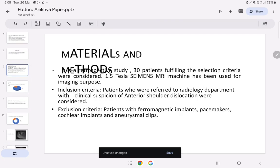Material and Methods: It is a retrospective study. 30 patients fulfilling the selection criteria were considered. 1.5 Tesla Siemens MRI machine has been used for imaging purpose. Inclusion criteria: Patients who were referred to radiology department with clinical suspicion of anterior shoulder dislocation were considered.